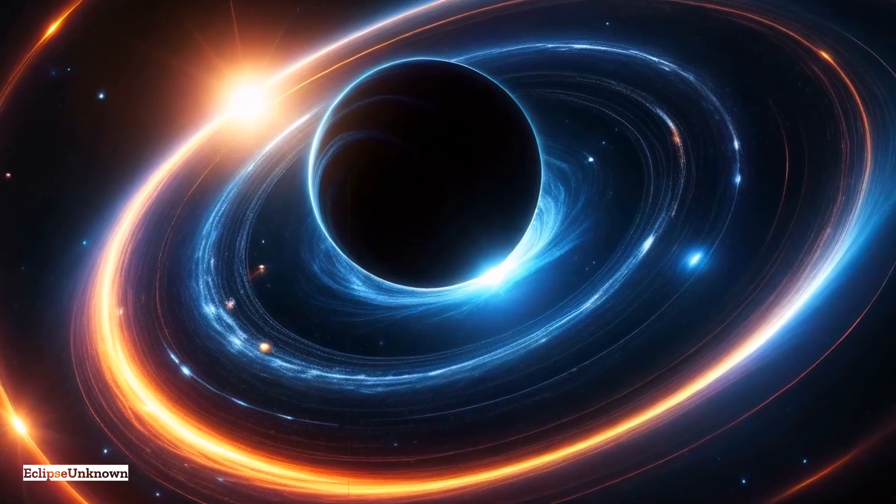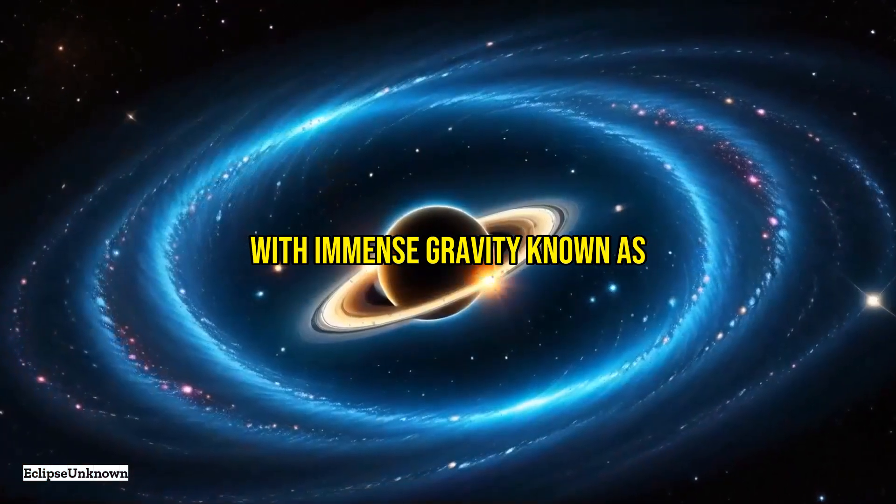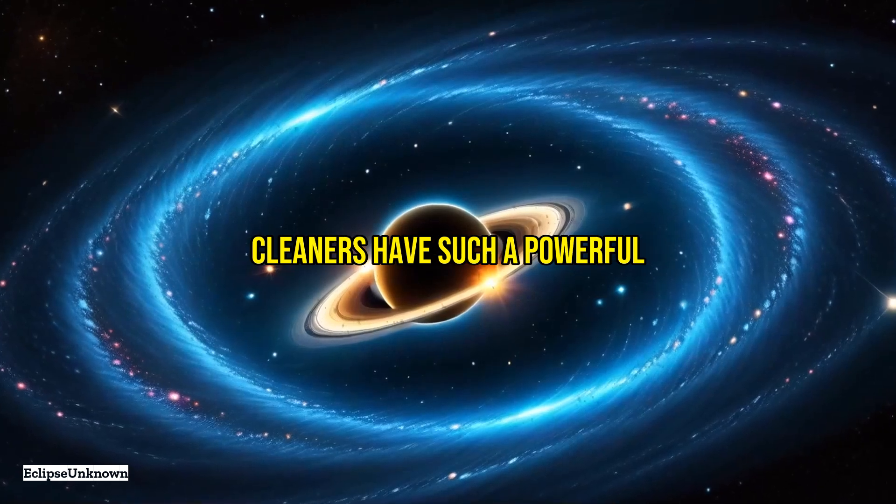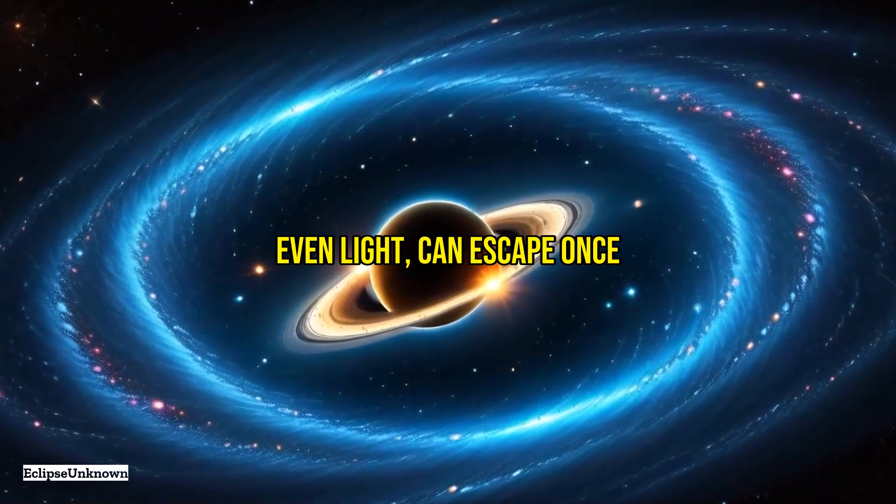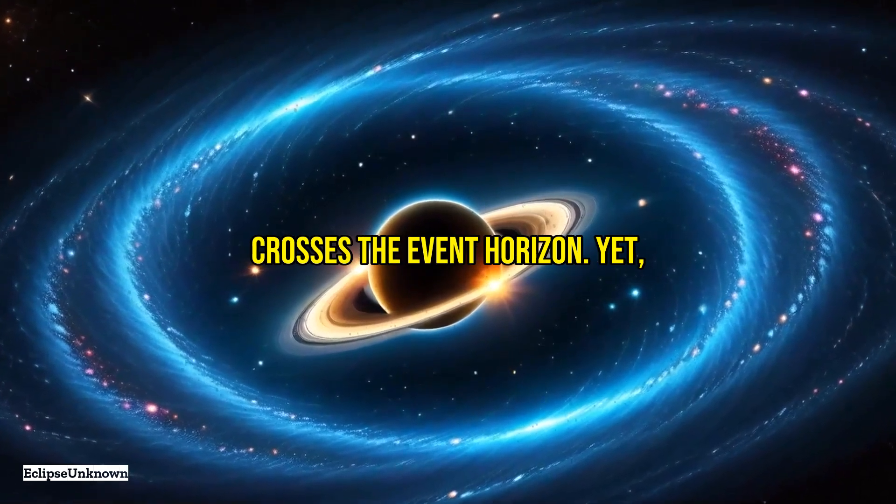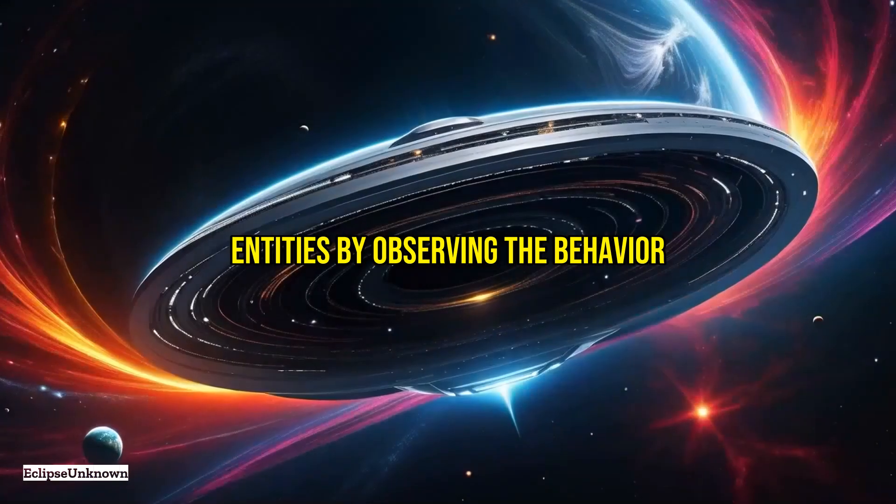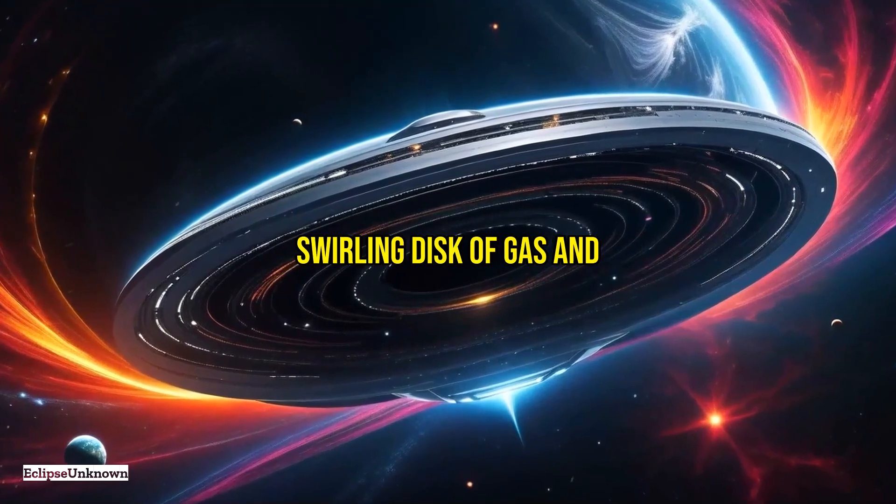We've also uncovered invisible objects with immense gravity known as black holes. These cosmic vacuum cleaners have such a powerful gravitational pull that nothing, not even light, can escape once it crosses the event horizon. Yet we can map these invisible entities by observing the behavior of nearby matter, such as the swirling disk of gas and debris heating up and emitting x-rays before the inevitable plunge.